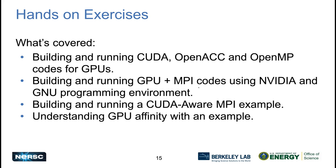We also have mixed examples where GPU kernels are called from MPI ranks. In some cases you want to use separate compilation because not all compilers can build everything. The last two examples cover CUDAware MPI and GPU affinity. CUDAware MPI gives you the ability to communicate between two GPUs directly — data from one GPU buffer can be transmitted directly to a remote GPU buffer.